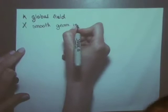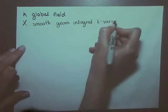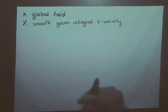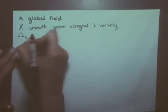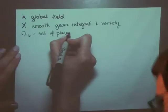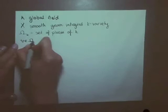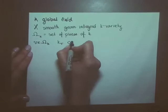Let X be a smooth, geometrically integral K-variety — and by variety I mean a separated scheme of finite type over K, slightly more restricted than in the previous talk. Capital Ω_K will be the set of places of K. For any v in Ω_K, K_v will be the completion and O_v will be the valuation ring.